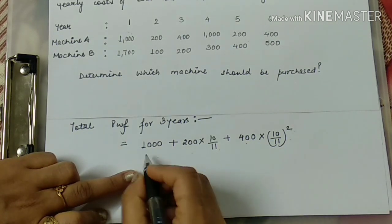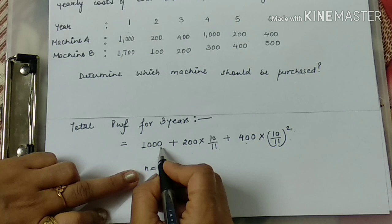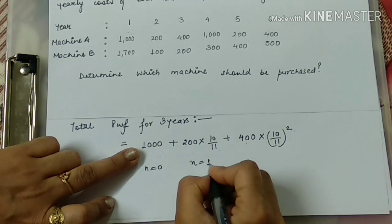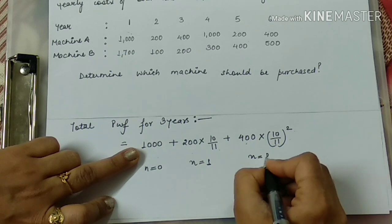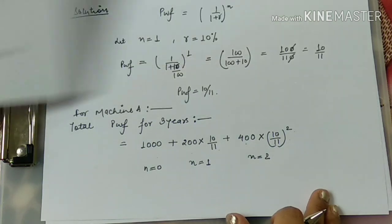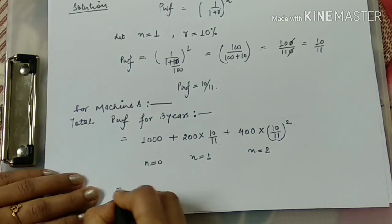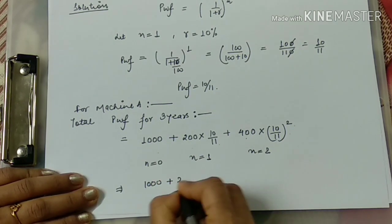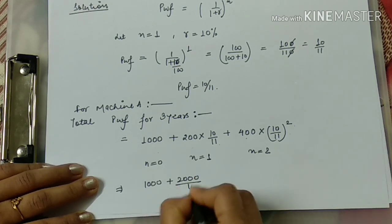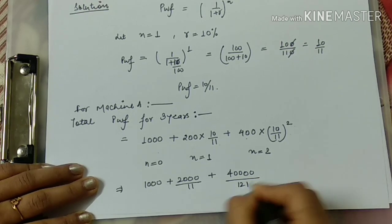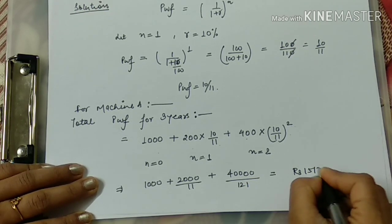For the 1st year, n = 0 because this is the start of year 1, so no present worth factor is applied. For year 2, n becomes 1, and for year 3, n becomes 2. When we total all these values — 1000 + 200×(10/11) + 400×(10/11)² — we get rupees 1512.